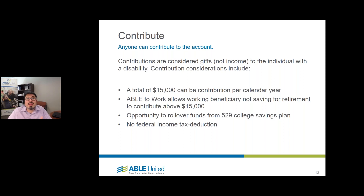Let's talk about contributions. Anybody can contribute to the account. They're considered completed gifts and not income to the individual with a disability, which allows family members or organizations to help an individual out without counting as a resource or income. The annual contribution limit is $15,000 per year from all sources. However, there is an exception: ABLE to Work legislation allows beneficiaries who are working and not currently saving for retirement to contribute above the $15,000 limit.